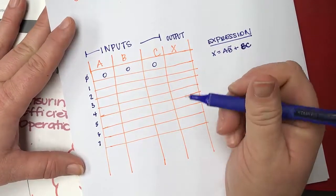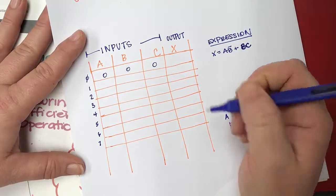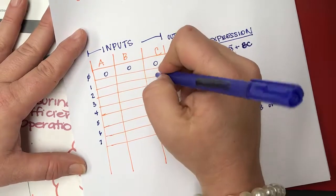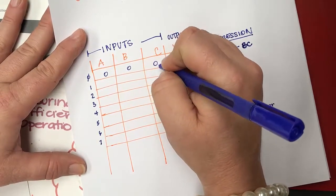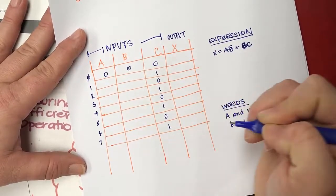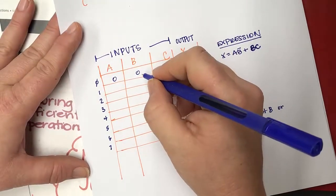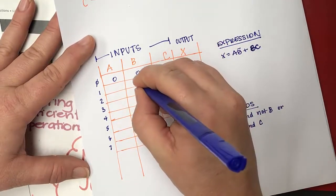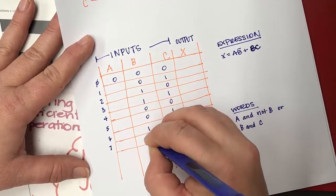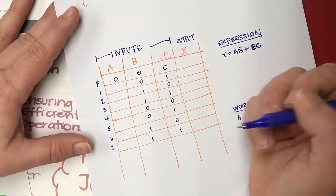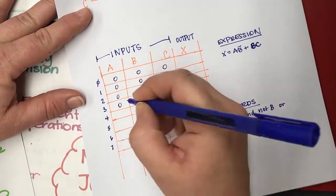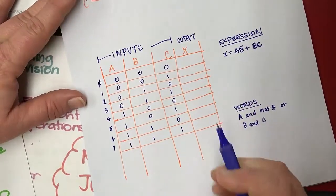There is an easier way to fill this in without thinking about counting. The least significant bit — the last column on the right — you alternate every time: zero, one, zero, one, zero, one, zero, one. The next column you do two zeros then two ones and alternate: zero, zero, one, one, zero, zero, one, one. The next column you do four zeros then four ones: zero, zero, zero, zero, one, one, one, one.